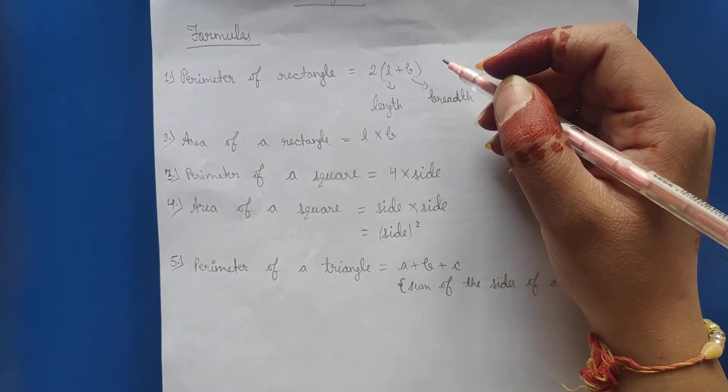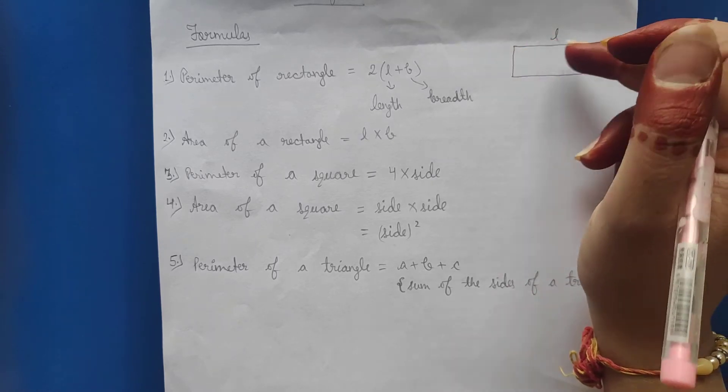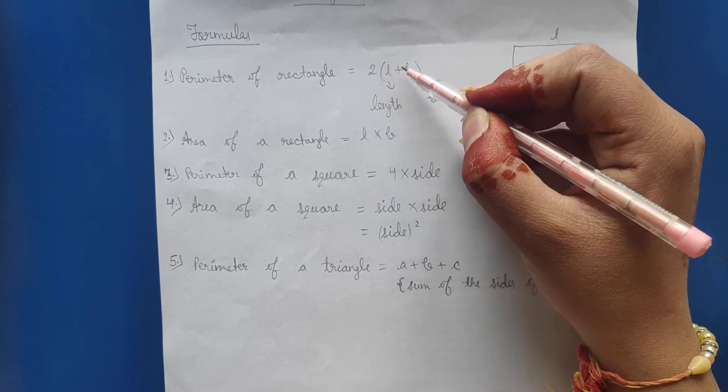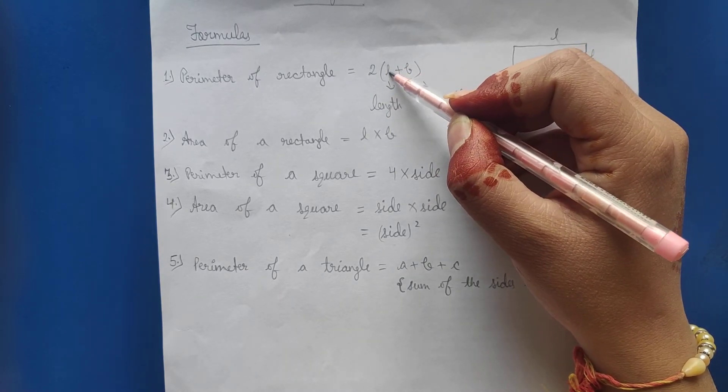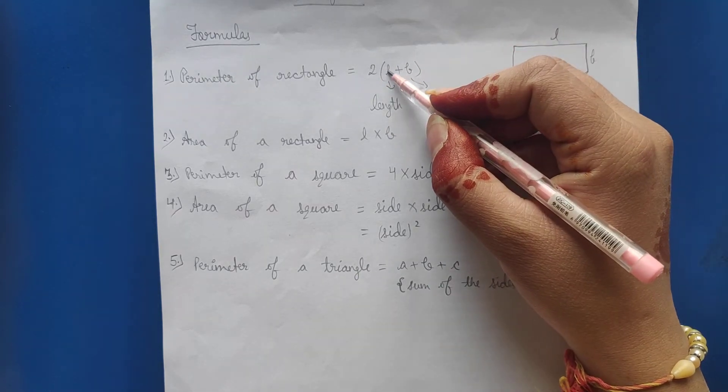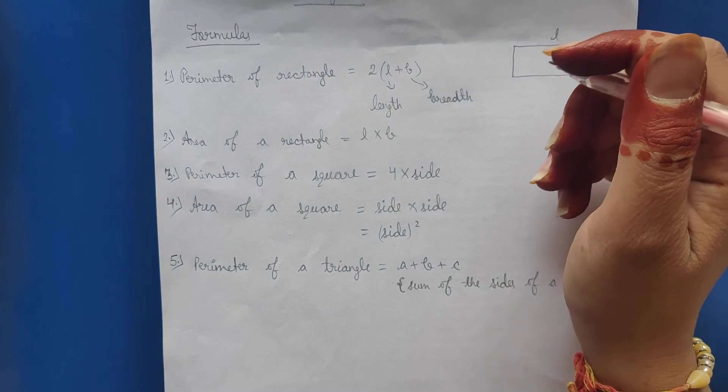Perimeter of rectangle is equal to 2 multiply length plus breadth. There will be 2 lengths and 2 breadths in a rectangle. So the perimeter will be 2 times length plus breadth. Length is denoted by L and breadth is denoted by B. Clear?